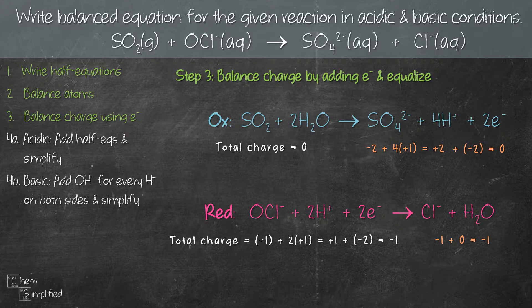Now that we've balanced the charge on both sides, we need to make sure the number of electrons in both the oxidation and reduction equations are the same. For oxidation we have 2 electrons, and for reduction we also have 2 electrons. Since they are the same, we don't have to do anything further to these equations — we're good to go.